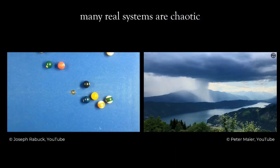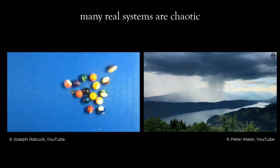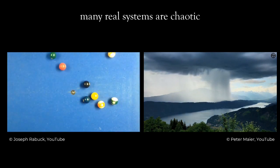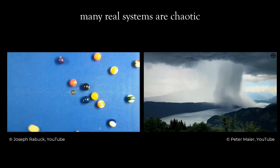For now, let me just point out that many real systems are chaotic. The weather is probably the prime example of a system that is irregular and unpredictable, but billiards are another everyday example that exhibits this property.